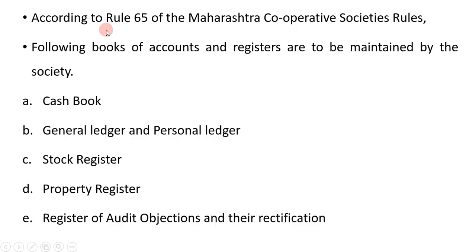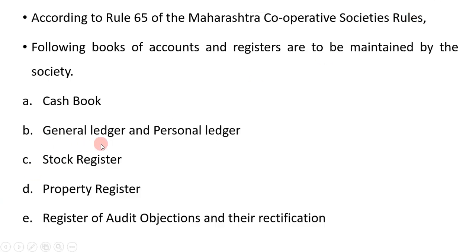According to rule 65 of Maharashtra Cooperative Society Rules, the following books of accounts and registers are to be maintained by the society: cash book, general ledger and personal ledger, stock register, property register, and register of audit objection and its rectification. These books are to be maintained by the cooperative society.